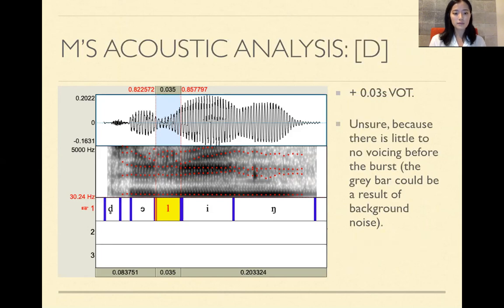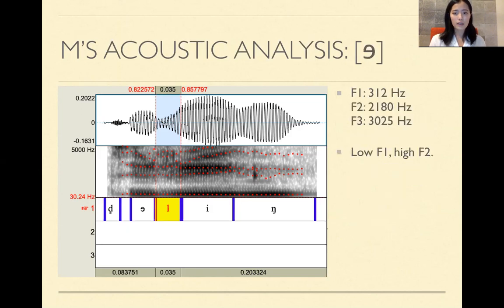So specifically for the /d/, it sounds exactly like a very short /t/. It almost sounds aspirated, but I just felt I just thought that it was still very slightly voiced with a little aspiration. I just said that this had a positive 0.03 seconds of VOT. And I thought that it could be the result of background noise while recording. And this is the /ə/, and this had an F1 of 312 hertz, F2 of 2180 hertz, and F3 of 3025 hertz. So it has a pretty low F1 and a high F2, but we'll see in a bit that it's different from the /e/ which has a very low F1 and a very high F2.